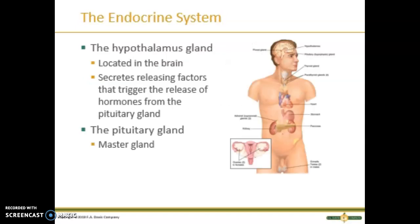Starting with the endocrine system: the endocrine system is made up of many organs that secrete hormones, which act as messengers to trigger a desired response in the body. The brain's hypothalamus, known as the body's switchboard, triggers the release of hormones from the pituitary gland and tells the pituitary gland what to do.